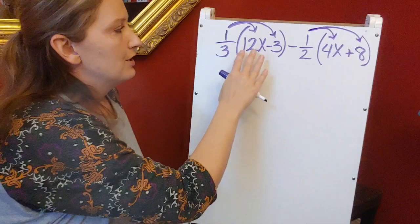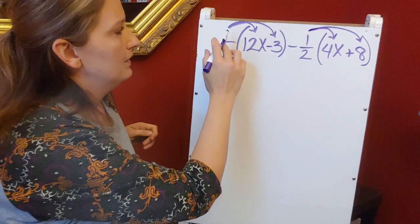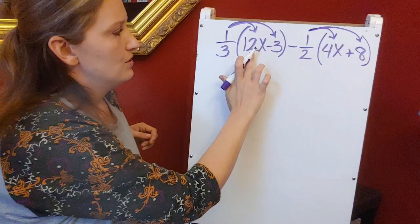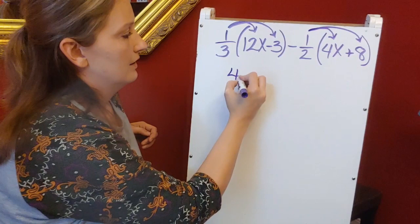So we're multiplying 1 third times 12x. Whenever we multiply that out, what we're really doing is taking that 1, multiplying it times the 12, and then dividing by 3. So 1 times 12 is 12. 12 divided by 3 is 4. So there's 4x.